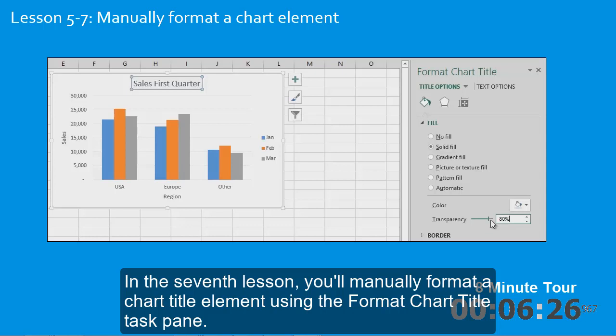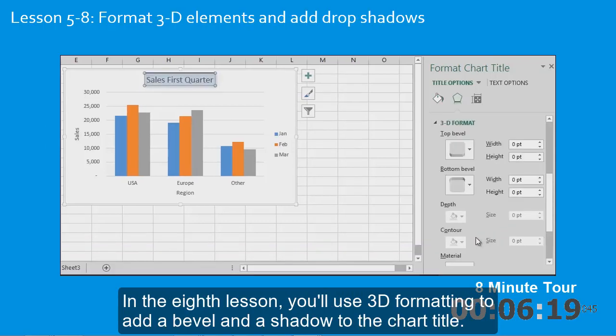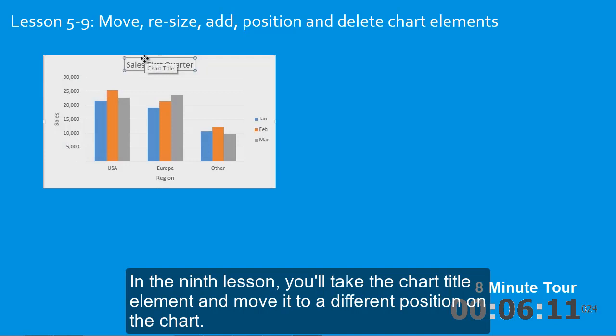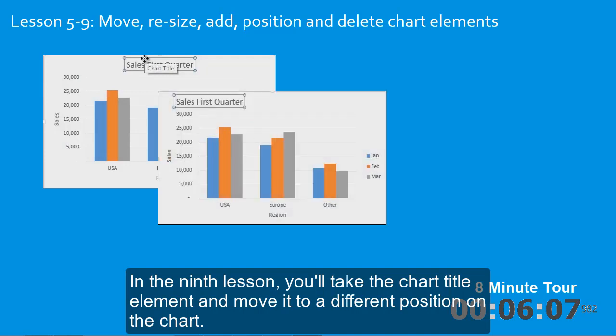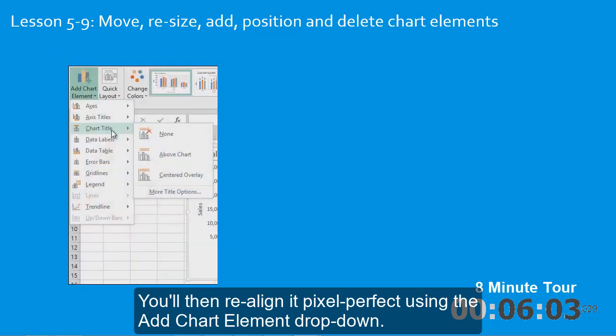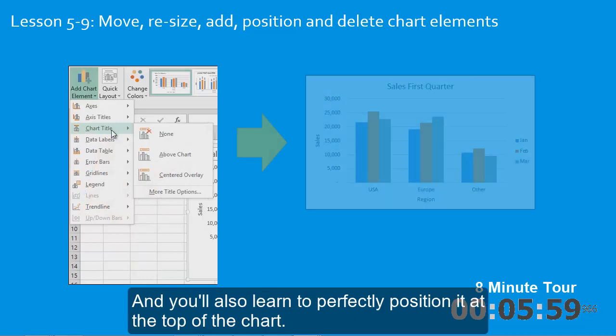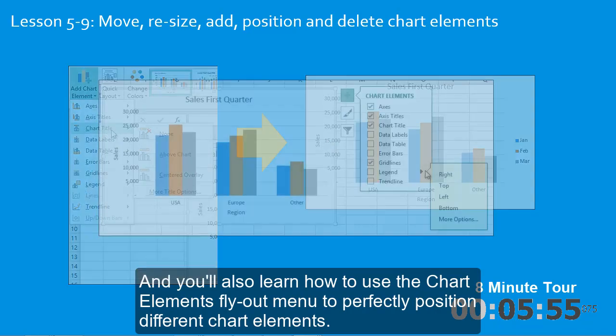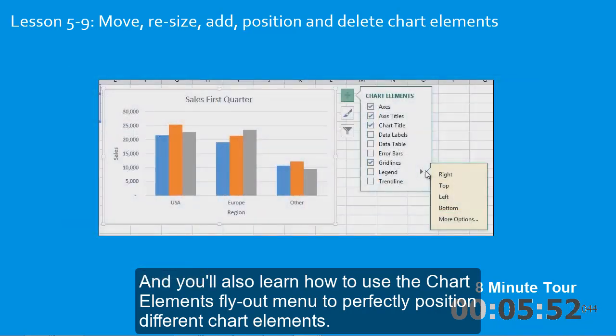In the seventh lesson you'll manually format a chart title element using the format chart title task pane. In the eighth lesson you'll use 3D formatting to add a bevel and a shadow to the chart title. In the ninth lesson you'll take the chart title element and move it to a different position on the chart. You'll then realign it pixel perfect using the add chart element dropdown and learn to perfectly position it at the top of the chart. You'll also learn how to use the chart elements fly out menu to perfectly position different chart elements.